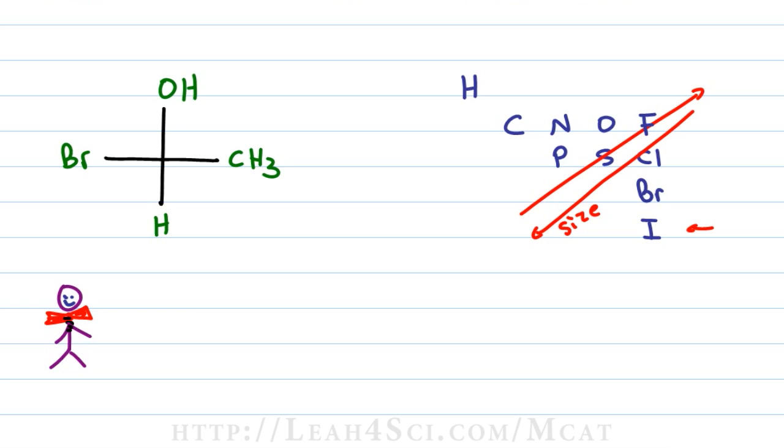So looking at this Fisher projection, the first thing we want to do is rank our groups. When you see hydrogen that's always number 4. Looking at the other atoms we have bromine as number 1, oxygen number 2 and carbon as number 3. We only care about the top 3 priorities as long as number 4 is into the page or on a Fisher projection up or down. Cancel out number 4, trace the path from 1 to 2 to 3 and since the top of the path goes to the right, that is R.